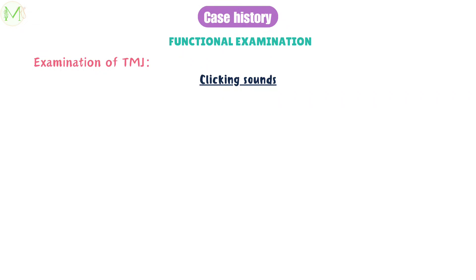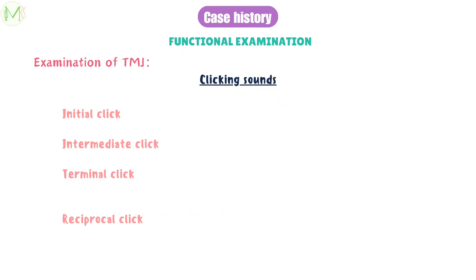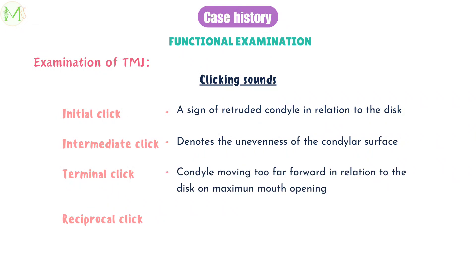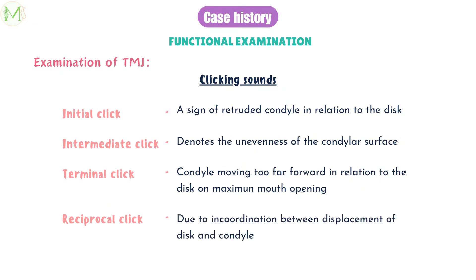The clicking sound in the TMJ can be of four types: initial click (sign of a retruded condyle in relation to the disc), intermediate click (denotes unevenness of the condylar surface), terminal click (condyle moving too far forward in relation to the disc on maximum mouth opening), and reciprocal click (incoordination between displacement of disc and condyle).